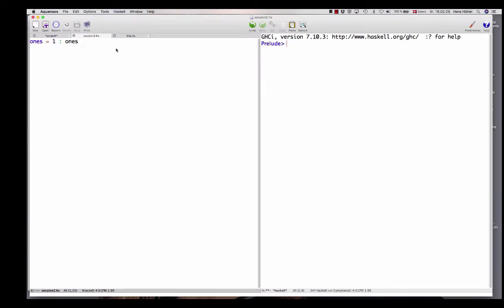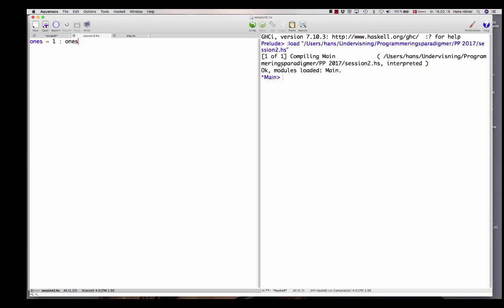Now, suppose that we have introduced the definition of the stream ones. We have it here. Let's save the file. Load it into Haskell. Can we then take the sublist consisting of the first 5 elements of ones? Yes, indeed. We get 1, 1, 1, 1, 1. That's what we wanted. So that's fine. Lazy evaluation to the rescue.